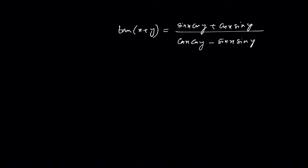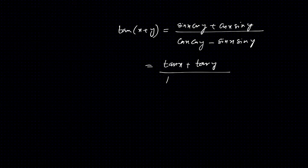Let's divide through by cos x cos y. Dividing numerator and denominator by cos x cos y gives us tan x plus tan y, divided by 1 minus tan x into tan y.